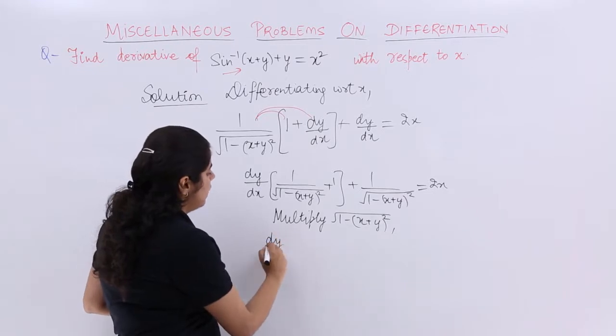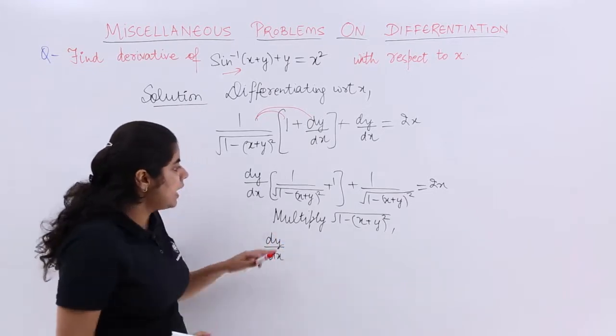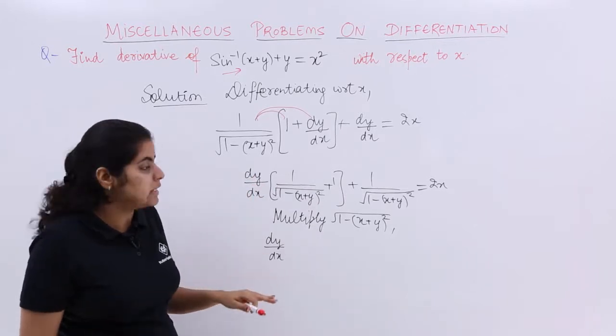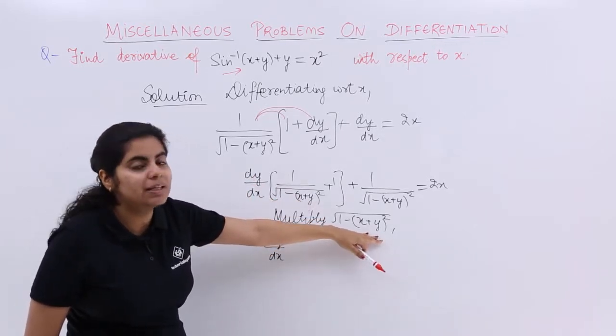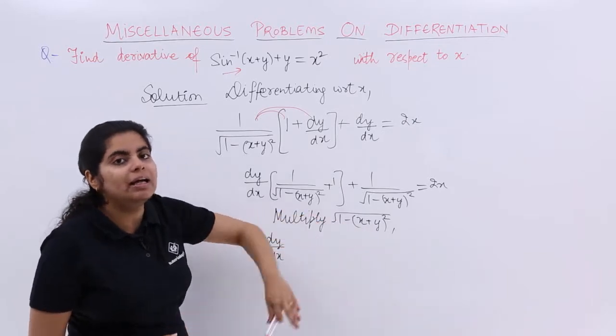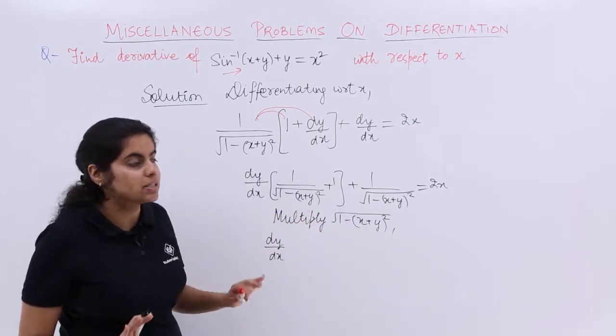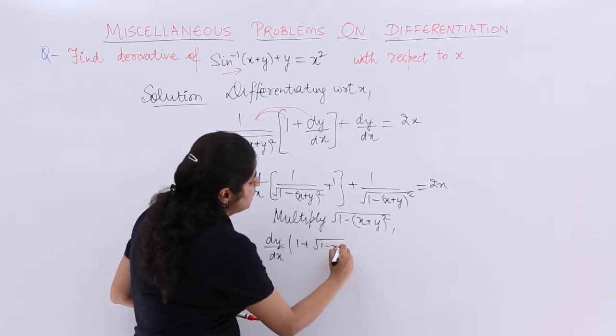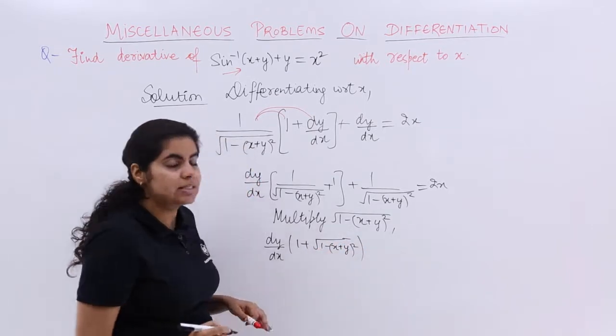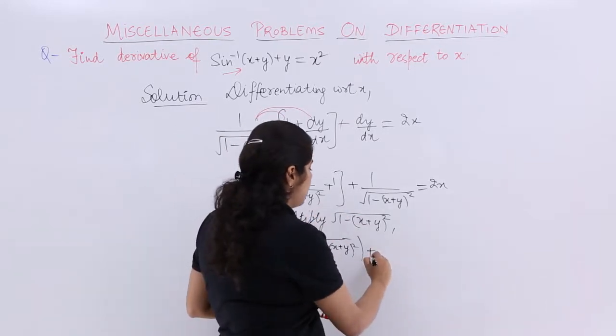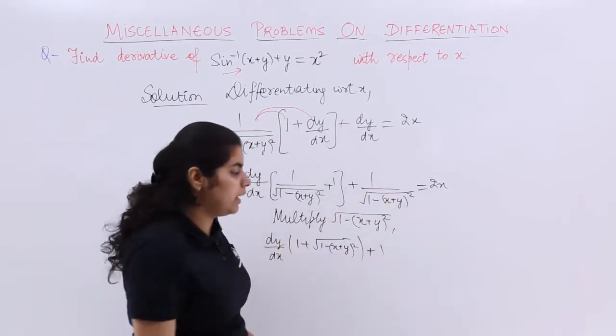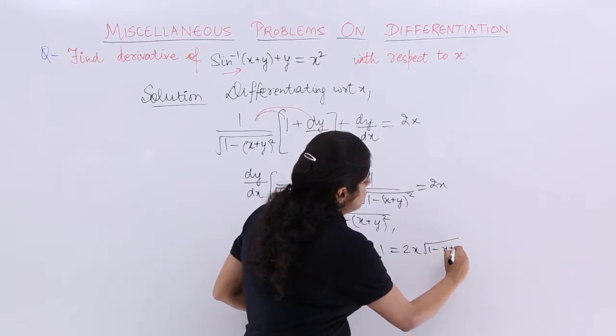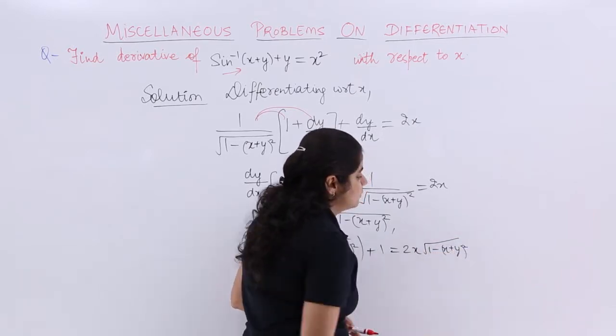So what happens? When the LCM would have taken place and you have multiplied by the same factor, the numerator and the denominator, this term got cancelled. So you would have got 1 plus under root 1 minus (x+y)². And here 1 would be there because you have multiplied and here it is 2x multiplied by under root 1 minus (x+y)².